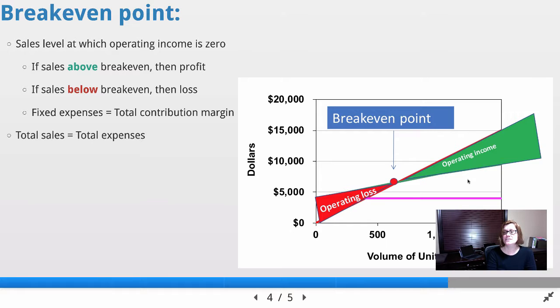Anything above this line in the green you see here is operating income. We like that, it means we're making money. Anything below that break-even point, we are actually losing money and we're functioning at an operating loss.